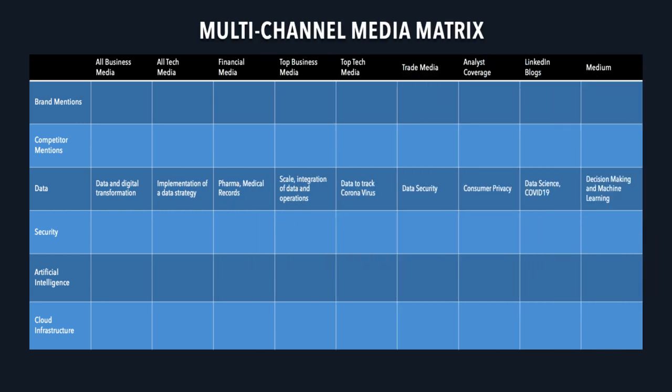Here's a quick example. I did a very quick cursory scan of data and cross-referenced each of these specific media channels. As you can see, the way each segmented channel covers data is different. The business media is talking about using data to drive digital transformation — a very high-level business topic. The top tech media is covering companies using data to track COVID-19 and using AI to predict new cases. And Medium's conversation is revolving around decision-making and machine learning. When you segment the media and contextualize the coverage at that level, you can glean very specific and actionable insights that will help you make smarter decisions. You can measure share of voice and share of coverage at each of these channels — it'd be pretty interesting to see the variance between each. And that is why multi-channel media intelligence will crush all of your other PR metrics.